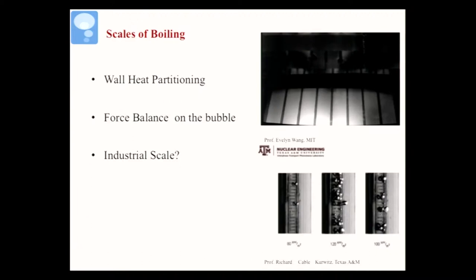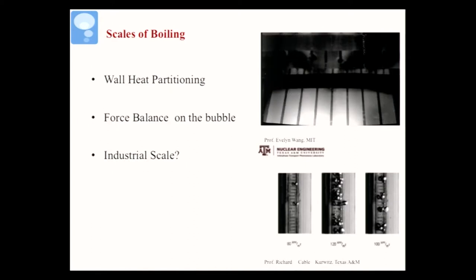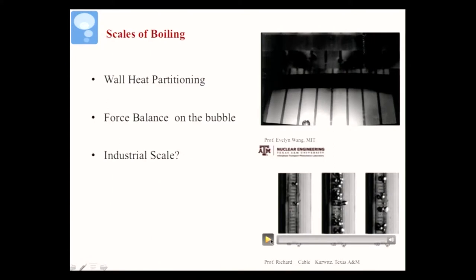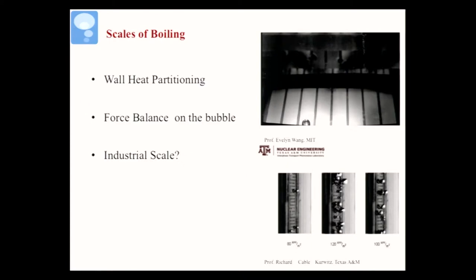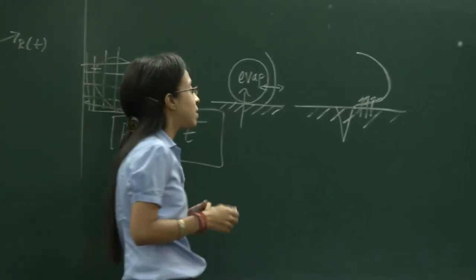Moving to scales of boiling: until now we have considered just a single bubble, but in reality many bubbles form simultaneously. A pool boiling experiment video by Evelyn Wong at MIT shows bubbles growing very closely and rapidly. As you increase heat flux, bubbles form at high frequency in different sizes; in flow boiling, bubbles of different sizes and velocities move through the system. Extrapolating from a single bubble R(T) to modeling this system of bubbles is done using wall heat flux partitioning.